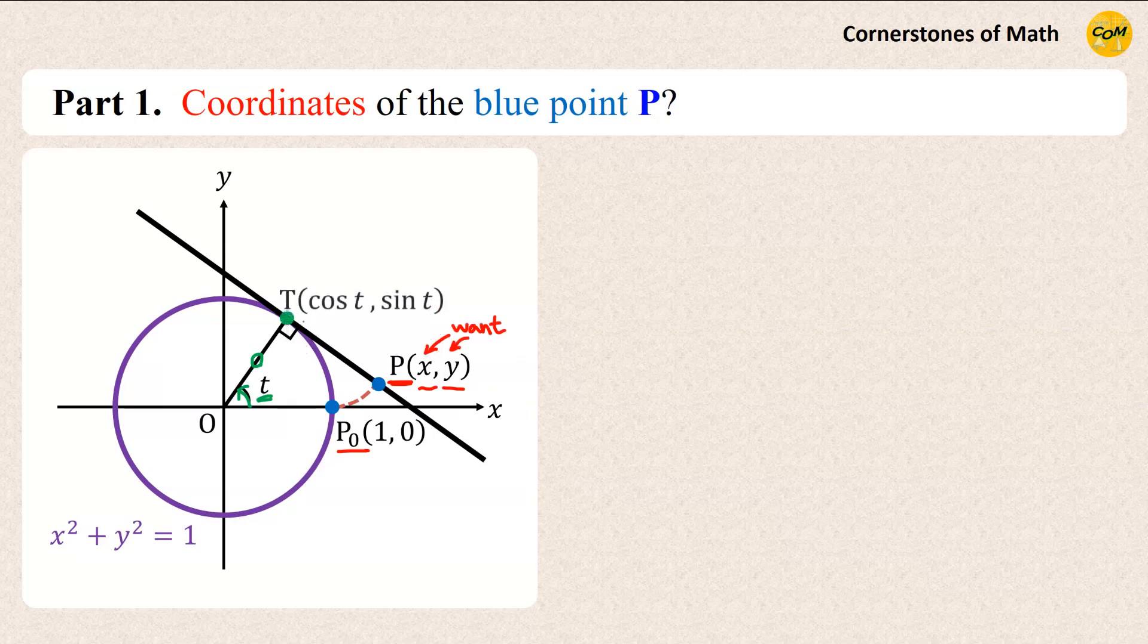What we want is to find the coordinates of point P. Moreover, we have to use this point of tangency T, and it is easy to notice that this point can be expressed as cosine T, sine T.